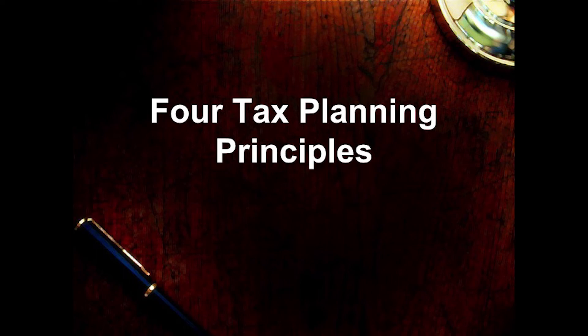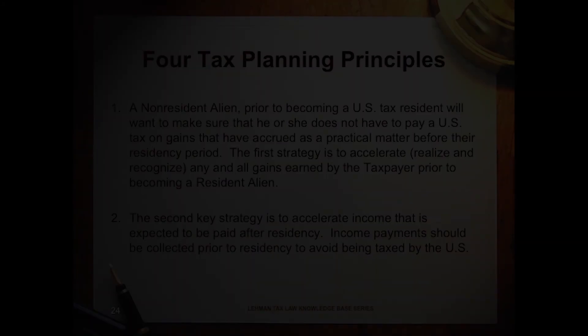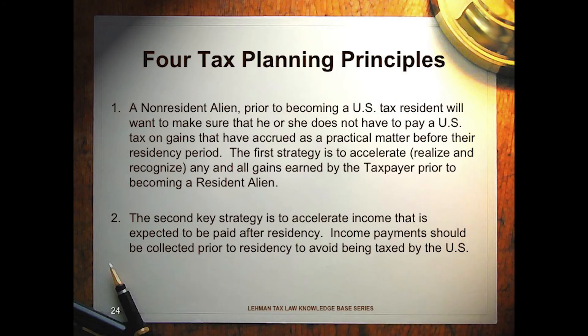We have four different items that we tax plan for. Like the Ecuadorian art seller, we tax plan to make sure that gains accumulated over the years are realized and recognized before you become a U.S. taxpayer. We do the same thing for income — you may have income owed to you from a company that has not paid your salary yet, and you want to get that salary paid to you before you come here and become a U.S. taxpayer.